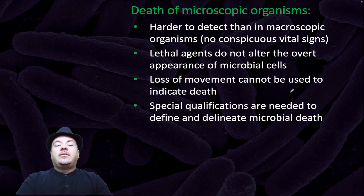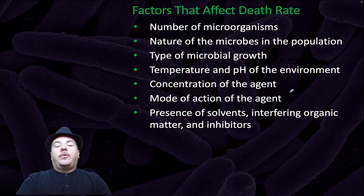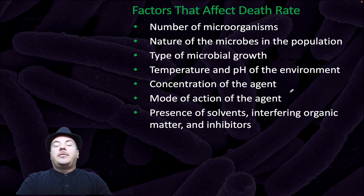The death of microorganisms is harder to detect than in macroscopic organisms. There are no conspicuous vital signs to measure for a bacterium. Lethal agents do not visibly alter the appearance of most microbial cells. Loss of movement cannot be used to indicate death, and special qualifications are needed to define microbial death. Factors that affect death rates include the number of microorganisms, the nature of microbes in the population, type of microbial growth, temperature and pH of the environment, concentration of the agent, mode of action of the agent, and presence of solvents, interfering organic matter, and inhibitors.